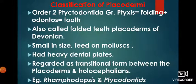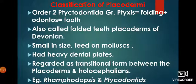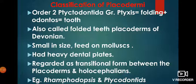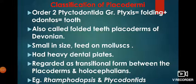Now order 2: Ptyctodontida. Its Greek literal meaning — 'ptyx' means folding and 'odontos' means tooth. So Ptyctodontida are folded-teeth Placoderms of the Devonian. Their size was very small, and they fed on molluscs. Since molluscs have shells, and breaking shells is not easy, a special adaptation was needed.